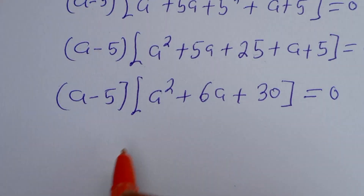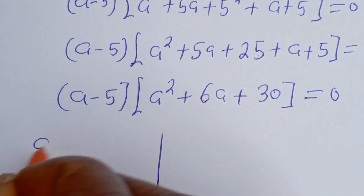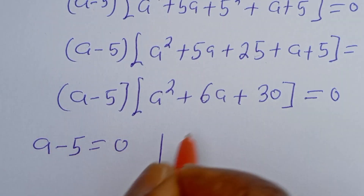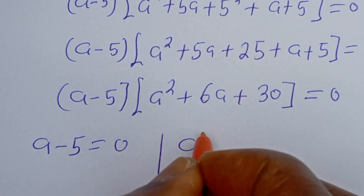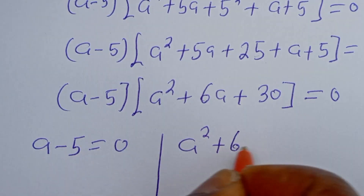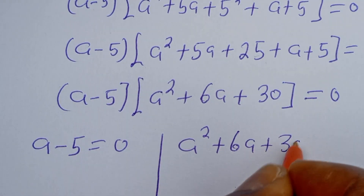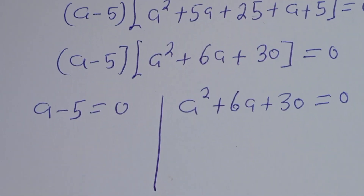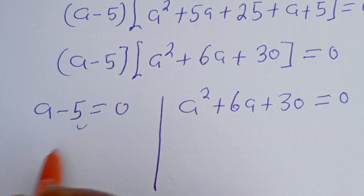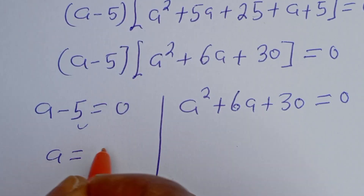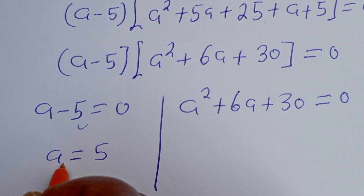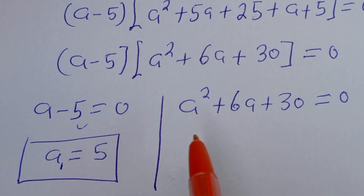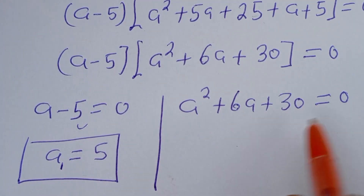Now from here there are two cases. The first case is a minus 5 is equal to 0, and the second case is a squared plus 6a plus 30 is equal to 0. From the first case, a is equal to 5. Let's call this a₁.